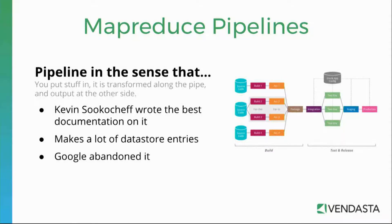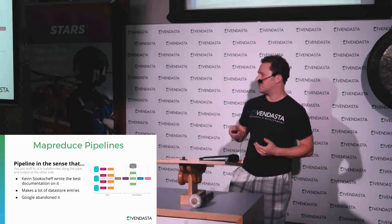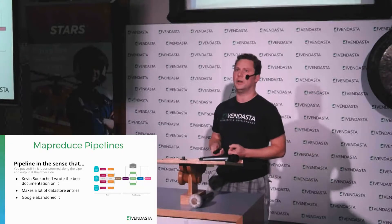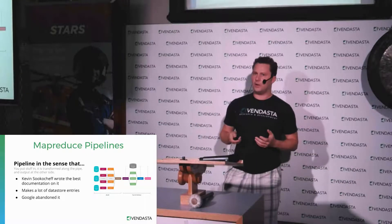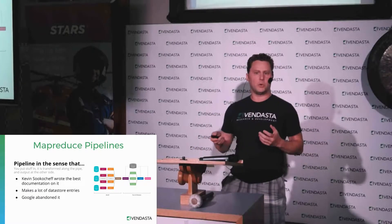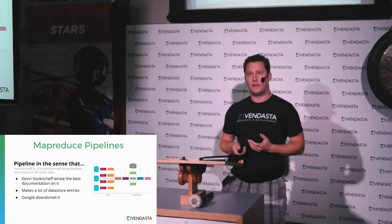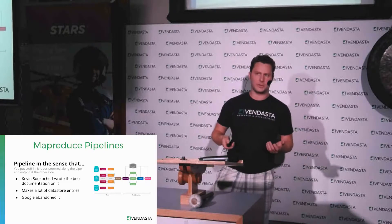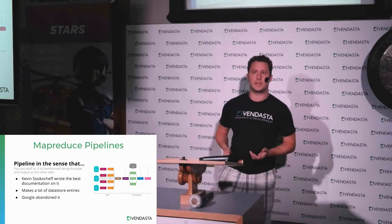So we changed to a new technology: map-reduce pipelines. Basically you put stuff in one side of a pipe, or multiple entrances, it transforms along the way, and puts it out the other side. Our next speaker Kevin wrote the best articles on this if you want to know more. Along the way this stored a lot of things in Google's Datastore to record where everything was — which was a bit of a downside. It was also abandoned by Google, so they stopped supporting it and we're left on our own. We're still using it a bit but it's not a preferred technology anymore.